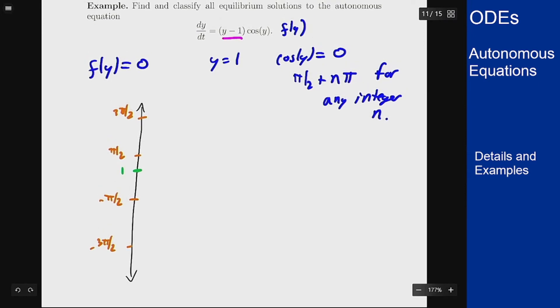Now our best bet here is probably to plug in values and see what happens in between these points. So I plug in y equals 0. I get y minus 1, that's negative, and cos(0) is 1. So this whole thing will be negative at y equals 0. So there I will have a down arrow.